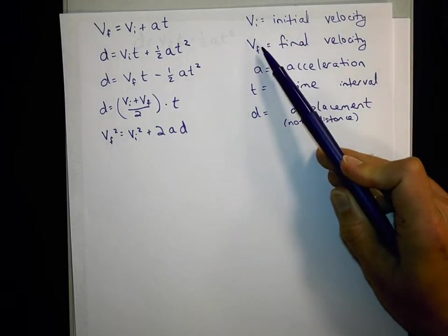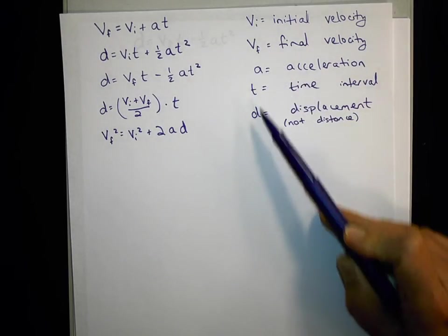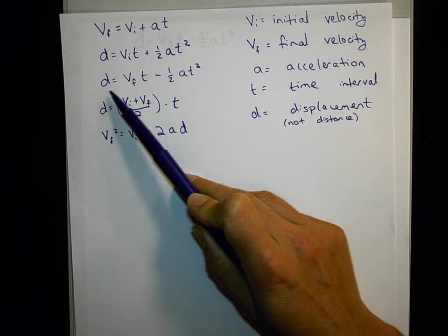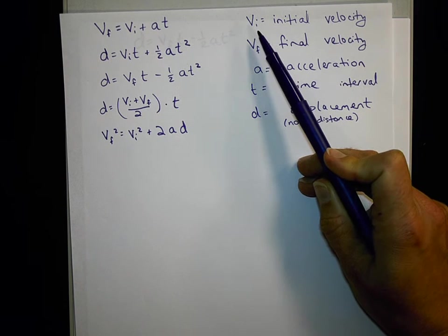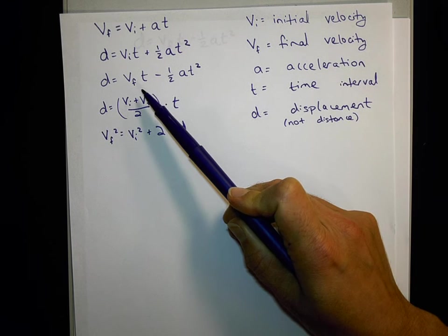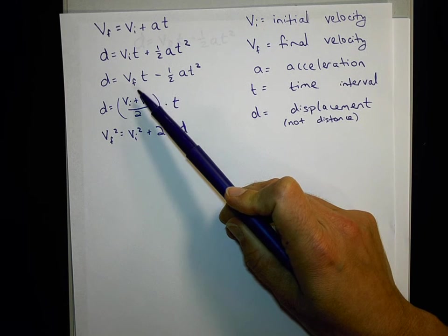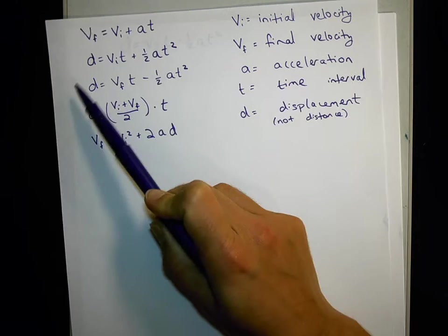And again, the givens are initial velocity, final velocity, acceleration, time, and displacement. We'll notice this equation that we're going to derive doesn't have initial velocity. So that would be a good choice when we don't need to know initial velocity. It's not a given, it's not what we're looking for. So let's go ahead and derive this third equation for constantly accelerated motion.